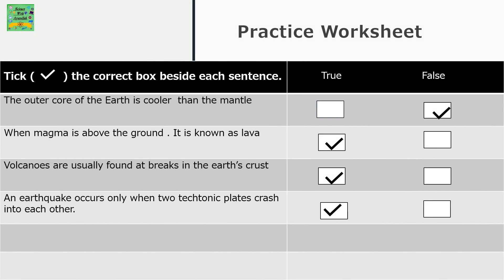Now take the correct box beside each sentence. The outer core of the earth is cooler than the mantle — this is false, because the outer core is present beneath the mantle, so it is supposed to be hotter. The crust, which is above the mantle, is cooler.